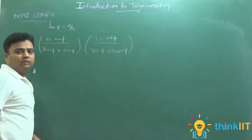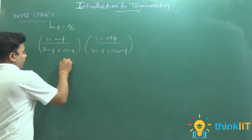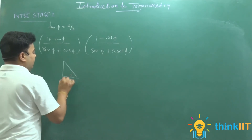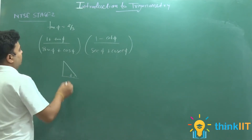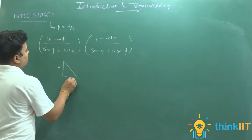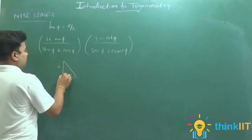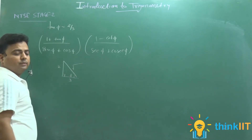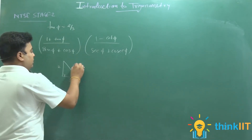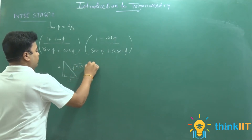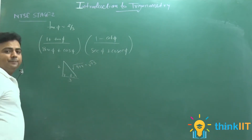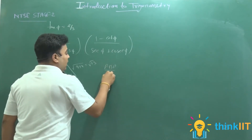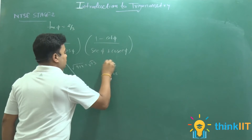ठीक है, मुझे इसकी value find करनी है। यहां से हम एक right angle triangle बनाते हैं। Perpendicular = 2, base = 3, तो hypotenuse = √(9 + 4) = √13। हम जानते हैं trick: पंडित बद्री प्रसाद हर हर बोले, सोना चांदी तोले।